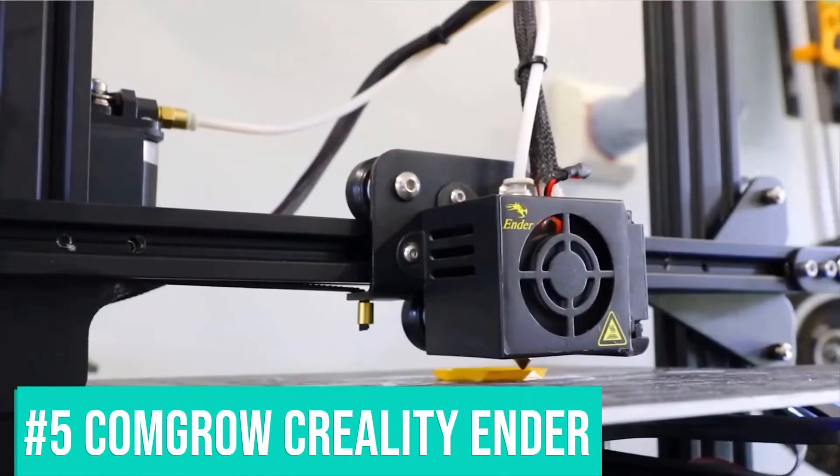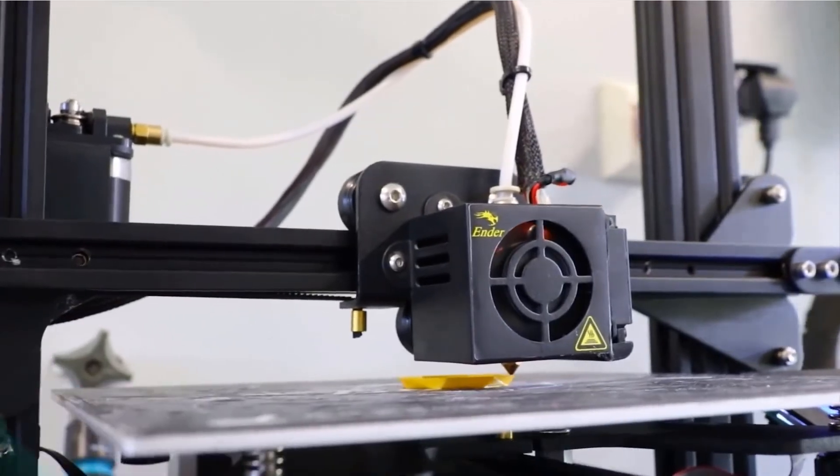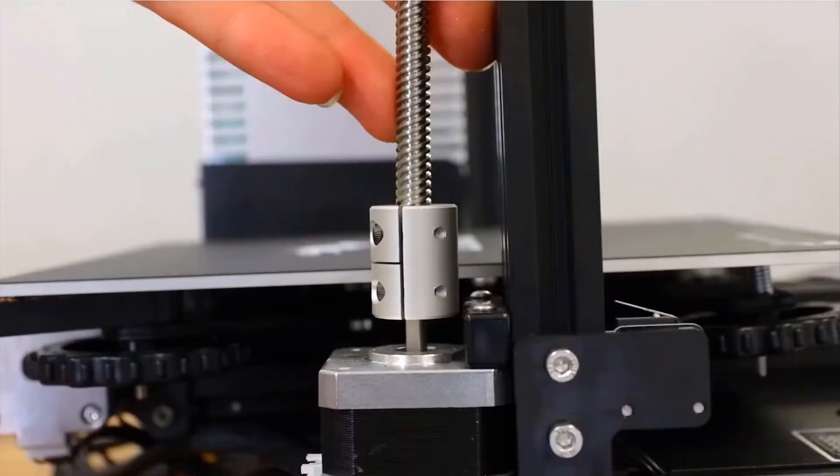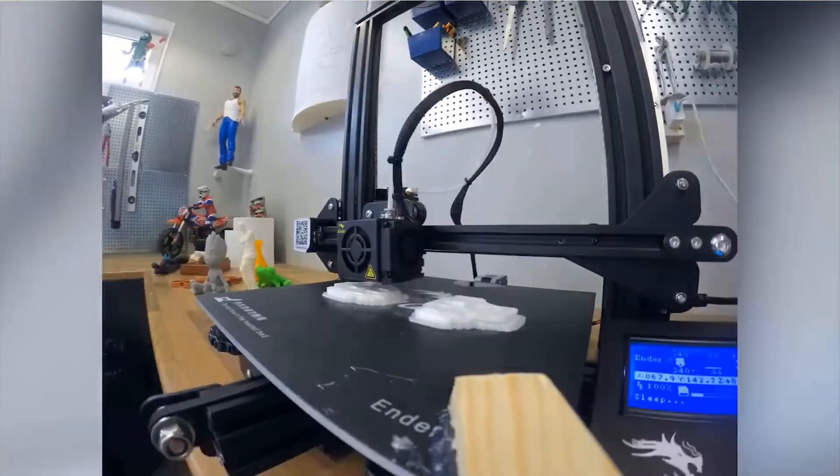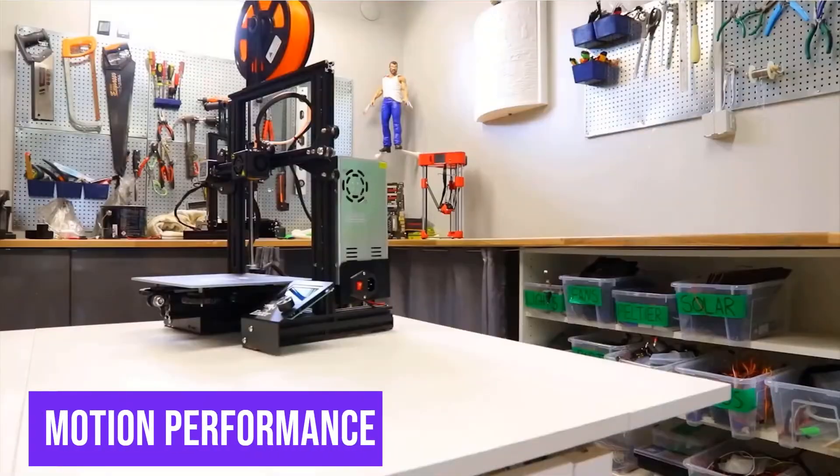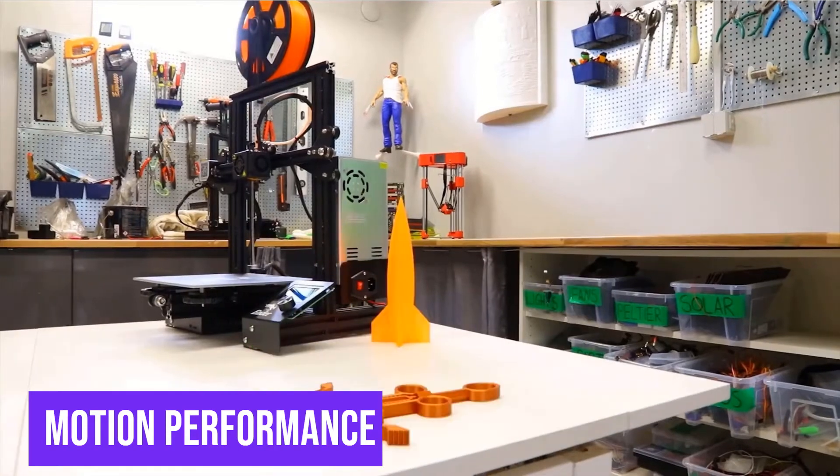The last one on the list is the Creality Ender 3D Printer. It features a self-developed silent motherboard. The Ender 3 V2 has a built-in self-developed silent motherboard, which provides stronger anti-interference, faster and more stable motion performance, silent printing, and low-decibel operation.